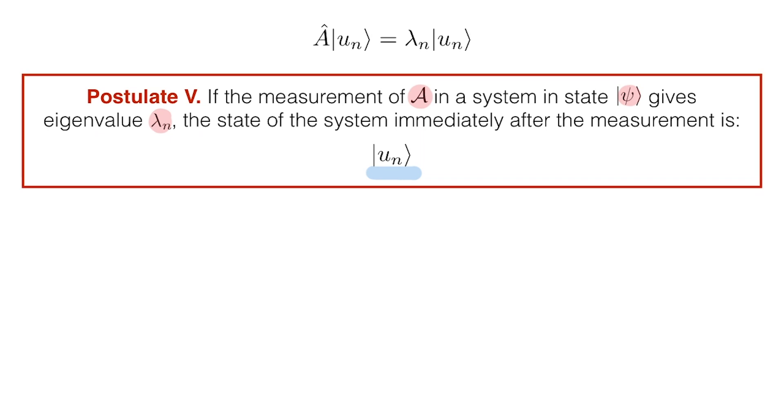So what does this mean? If we have a system in state psi, and we want to measure property A-hat, then in general we could get any eigenvalue of A-hat as the outcome of the measurement. All we can know before the measurement is the probability of getting any particular outcome. But once we've performed the measurement, then we get one of these possible outcomes, say lambda n.